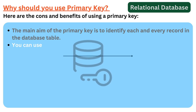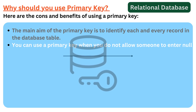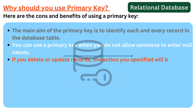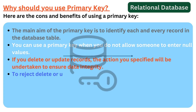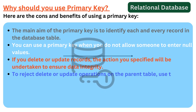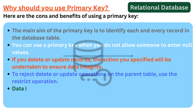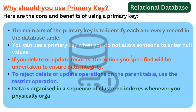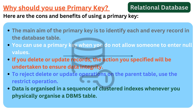You can use a primary key when you do not want to allow someone to enter null values. If you delete or update records, the action you specified will be undertaken to ensure data integrity. To reject delete or update operations on the parent table, use the restrict operation. Data is organized in a sequence of clustered indexes whenever you physically organize a DBMS table.